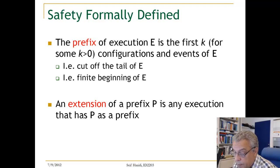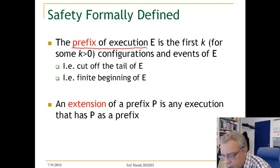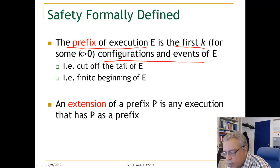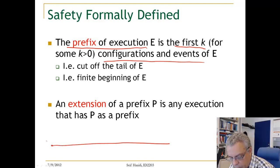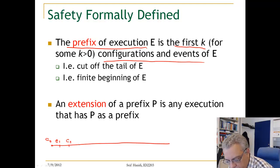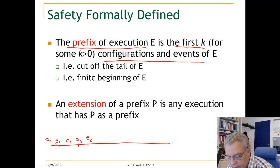Let us now look at safety property formally defined. To define safety, we first define the notion of a prefix of an execution. Given an execution E, a prefix is the first k configurations and events of E. So you start with configuration 0, then event 1 leads to configuration 1, then event 2 leads to configuration 2, and so on. A prefix is just the first k configuration-events.